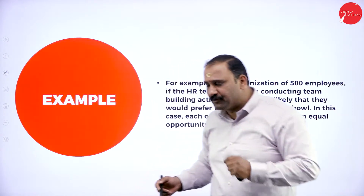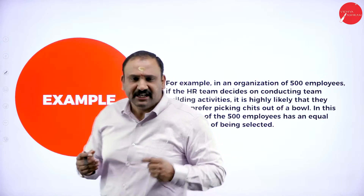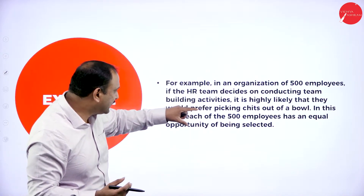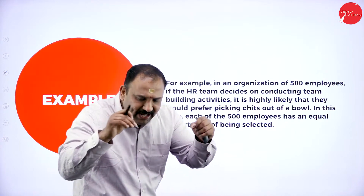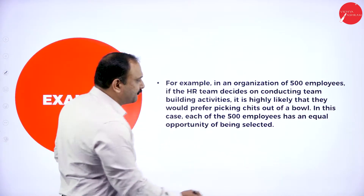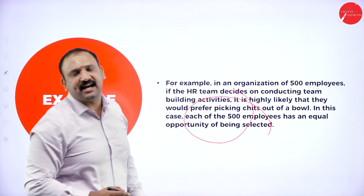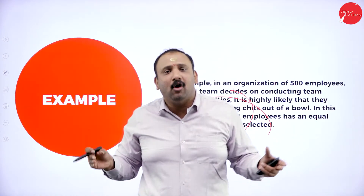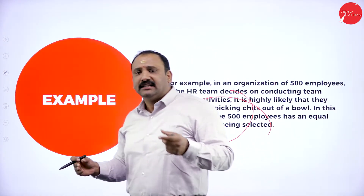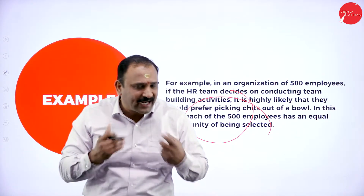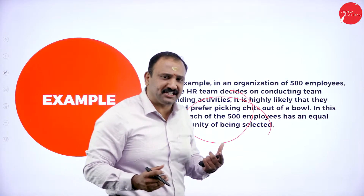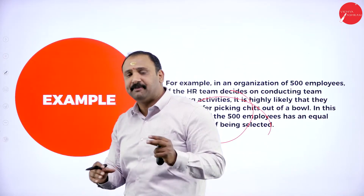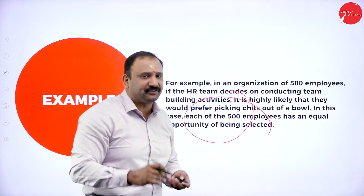For example, in an organization, the HR team decides on conducting team-building activities. It is likely to prefer picking chits out of a bowl — we put the names of all employees in a bowl and draw from it. Each of the 500 employees will have an equal chance of getting selected. This is an equal opportunity method, so the researcher randomly picks results, records whatever comes from the sample population, and gets very effective, better results.